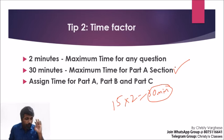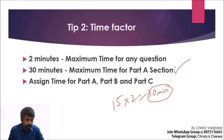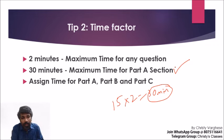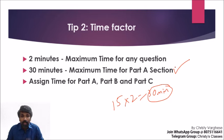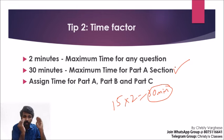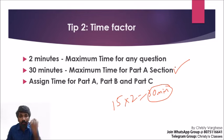The third point is to assign time for Part A, Part B, and Part C. Only if you assign time will you manage it properly. A common mistake is doing Part B and C first, then coming back to Part A at the end — but by then, 2 hours 50 minutes are over and only 5-10 minutes remain, leading to panic and mistakes. Before the exam, have a clear cut plan for how much time you give each part.